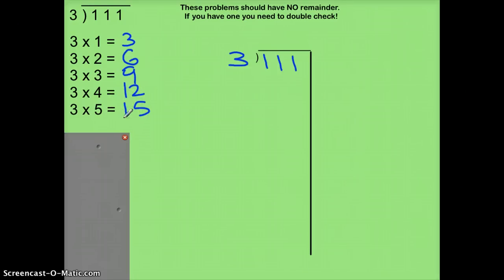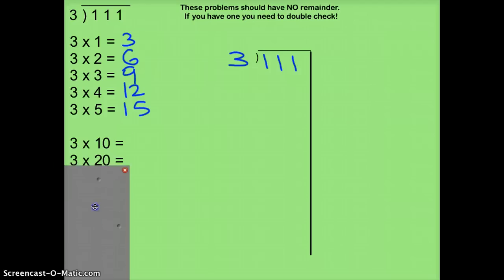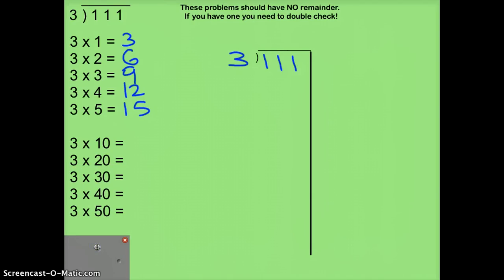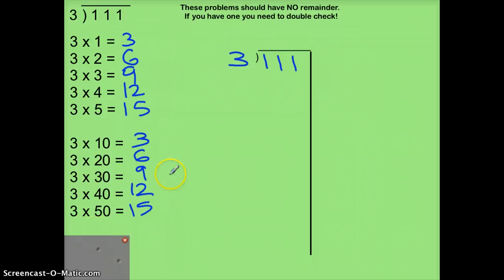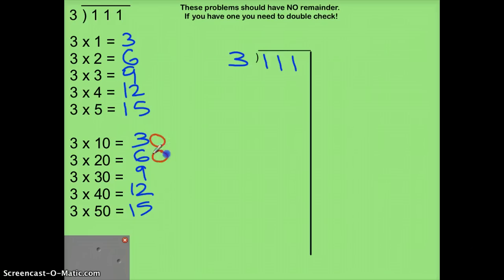I want a product that's close to 111 — that's my dividend. I don't have one that's close enough. So I can take these facts and add a zero. Let's do the next five. I'm going to write these same products again, and here's 10, 20, 30, 40, 50 with one zero added. So what will I add to these? One zero. This becomes 30. Next? 60. Next? 90. Next? 120. Why am I stopping here? It's over — 120 is already over 111.